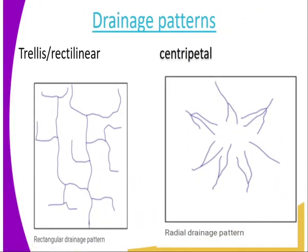Then we have the trellis drainage pattern. When we talk about the trellis, it means that the angle made by the tributaries is almost 90 degrees, as you can see from the diagram.